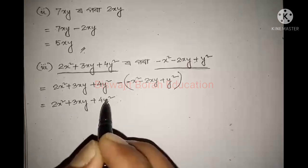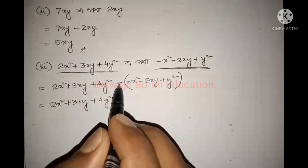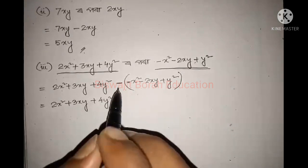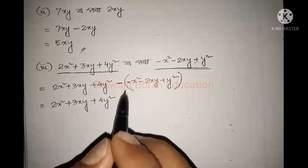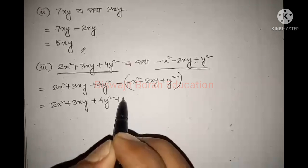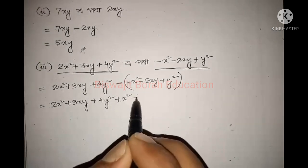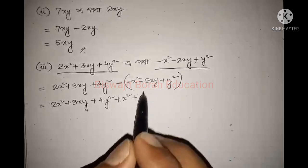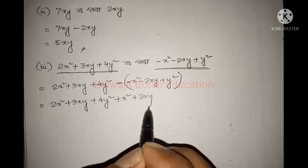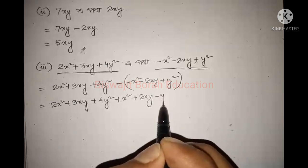4y squared. We have a minus here, bracket of this. Using two colors, we complete it. So e to minus becomes plus. x squared. Then e to minus becomes plus, minus 7 becomes plus, 2xy. Then e to minus, plus, minus y squared.